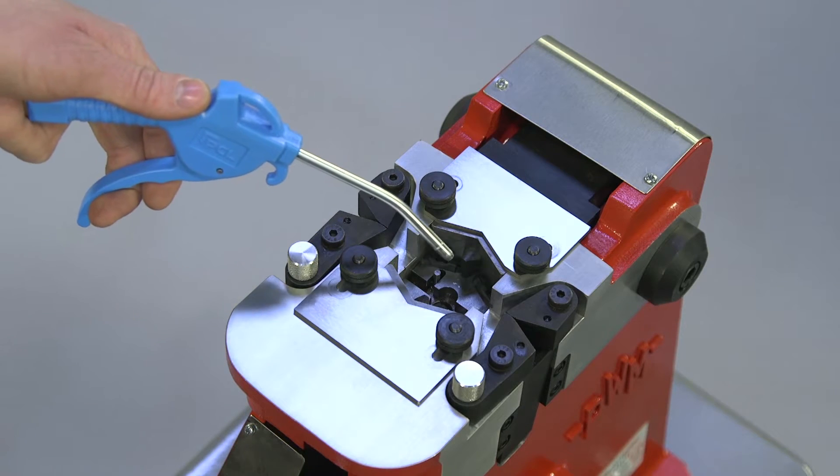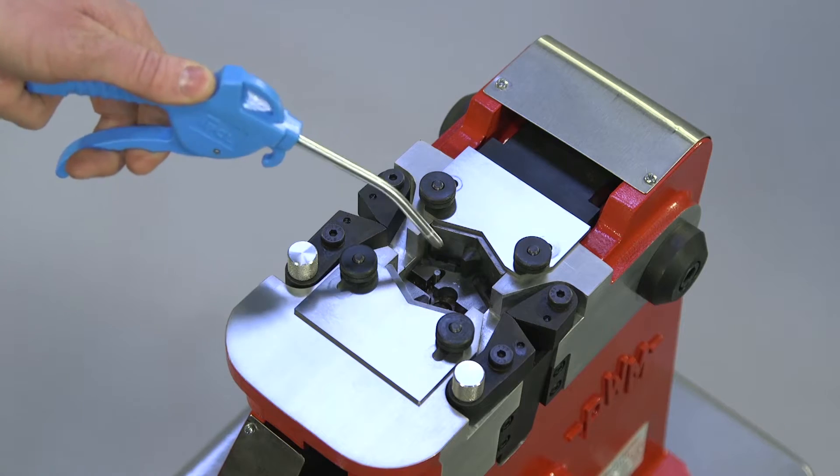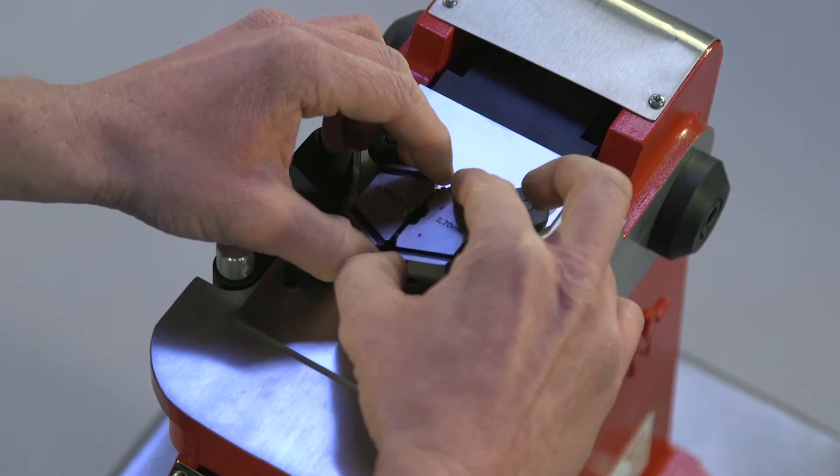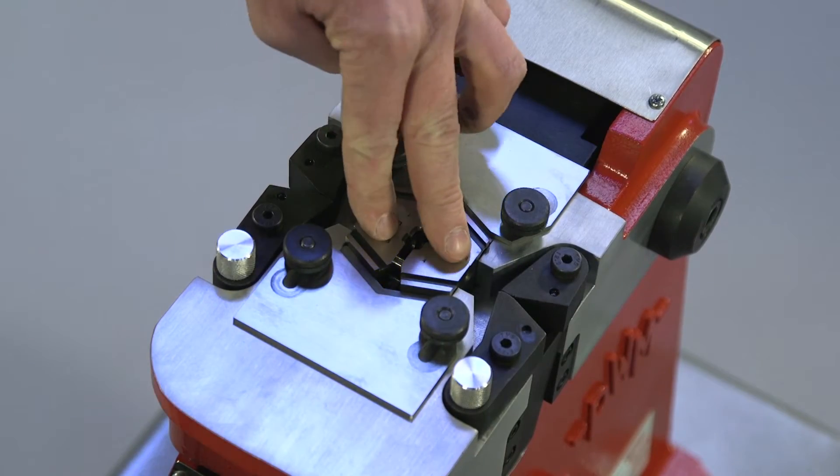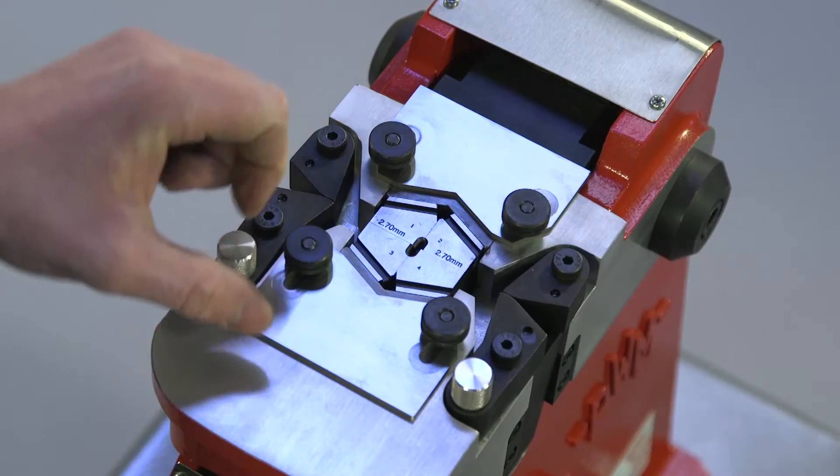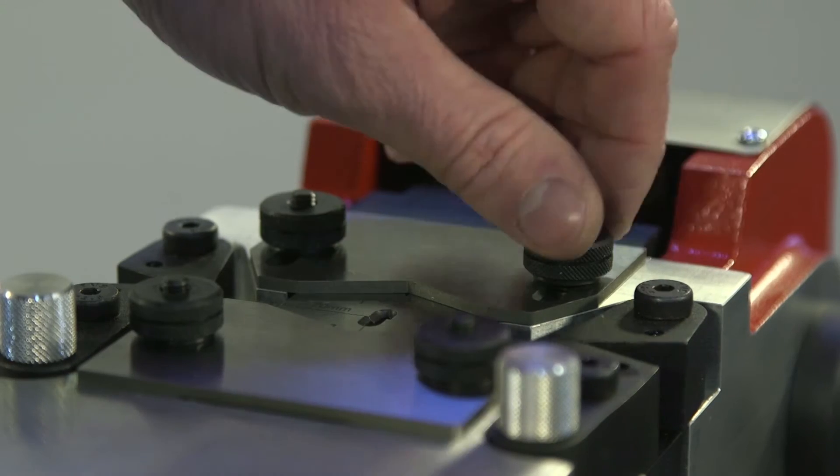Before fitting the die, the die pocket must be thoroughly cleaned to remove any fragments of debris. The die is then placed carefully into the die pocket and the retaining plates are slid into place and locked down.